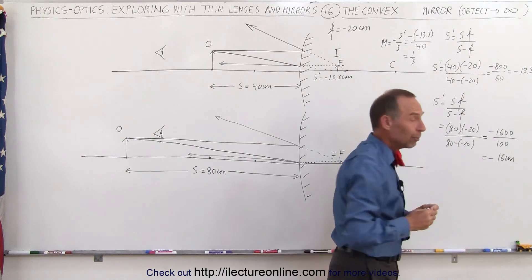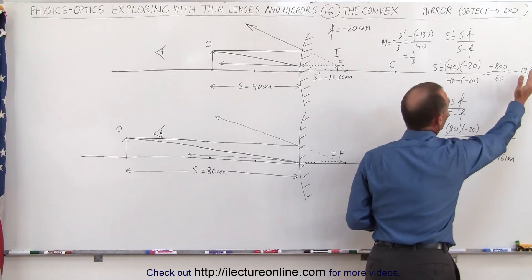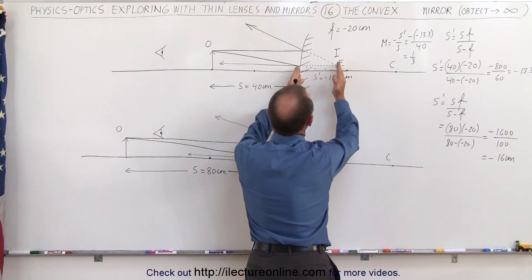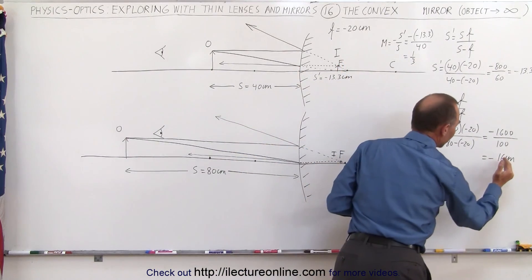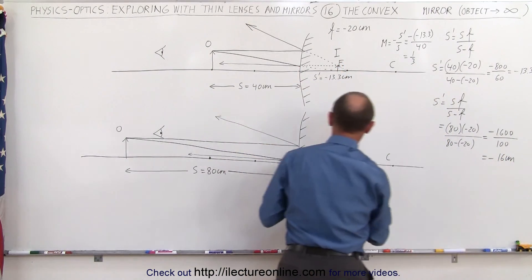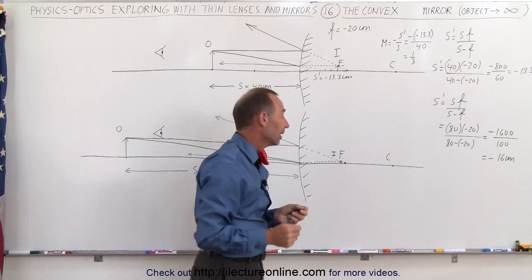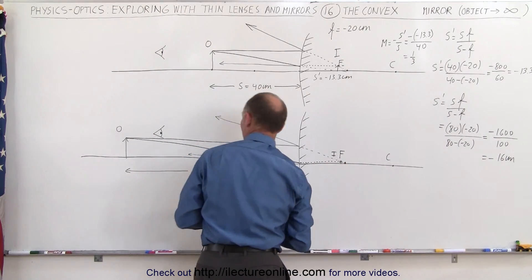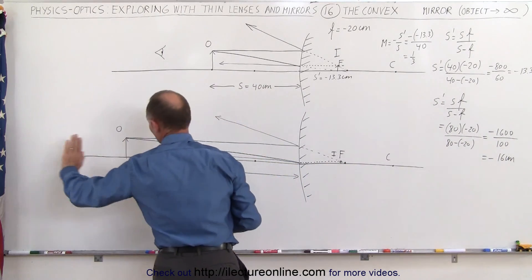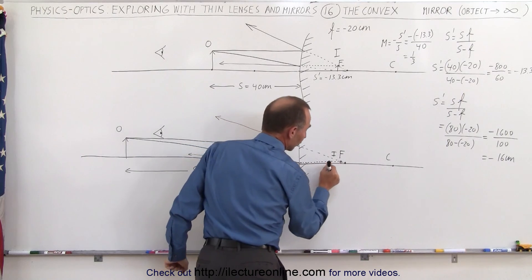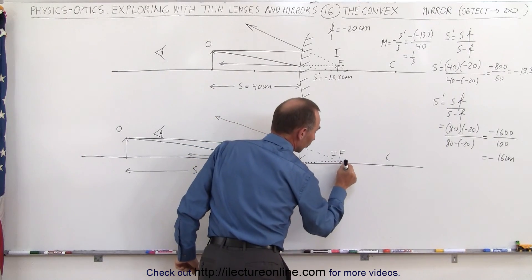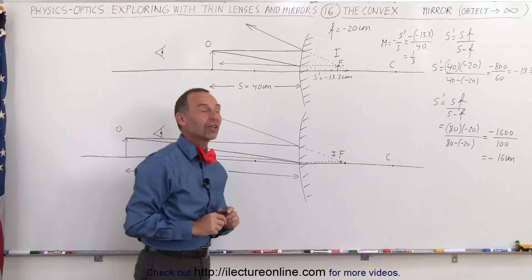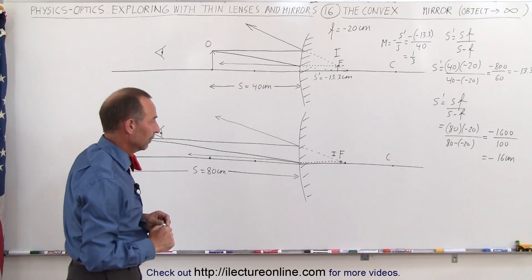So the image moved from 13.3 centimeters behind the mirror to now 16 centimeters behind the mirror. As you can see, since the focal point is at 20 centimeters, as the object goes to infinity, the image gets closer and closer to the focal point — closer to the 20 centimeters behind the mirror.